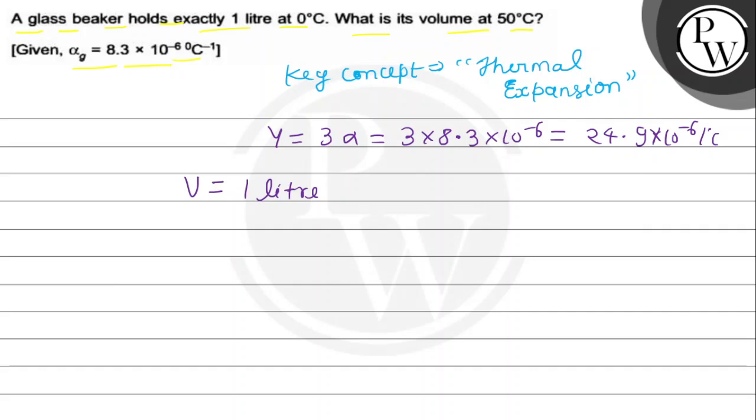Volume at 50 degree Celsius equals V initial times 1 plus gamma delta T. That's 1 litre times 1 plus 24.9 into 10 power minus 6 into 50.